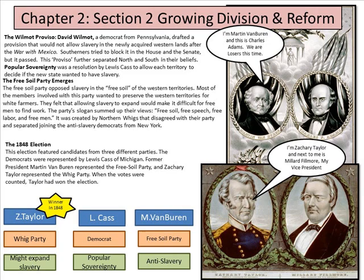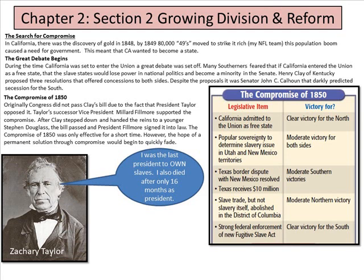The search for compromise: in California, there was a discovery of gold in 1848. By 1849, the 49ers moved to strike it rich — my NFL team, but that has changed. This population boom caused the need for government, meaning California wanted to become a state. The great debate begins.